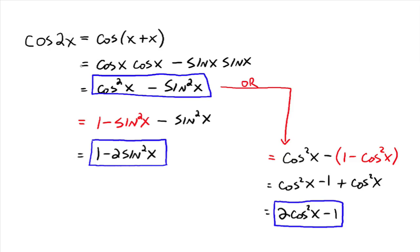So cosine of 2x can be written in one of three ways. For the first form, you need to know both the cosine of the angle and the sine of the angle. For the second form, you only need to know the sine of the angle. And for the third form, you only need to know the cosine of the angle. Any of those will let you find the cosine of twice the angle.